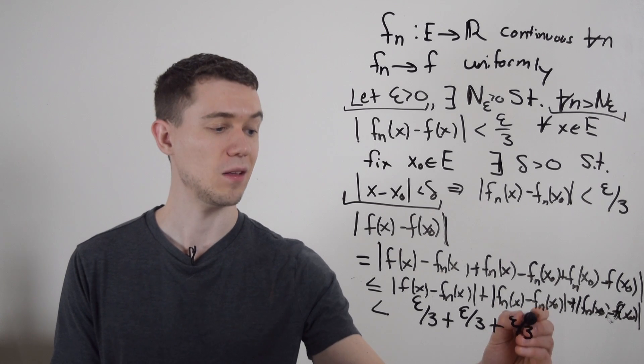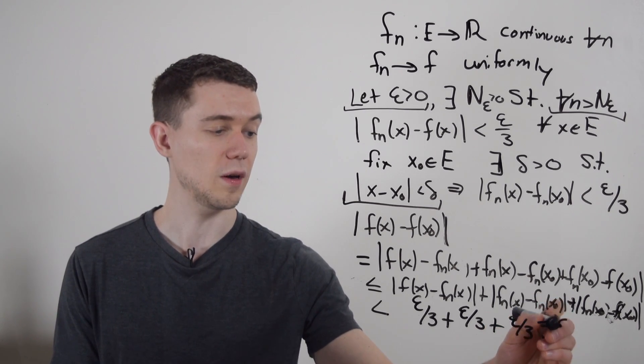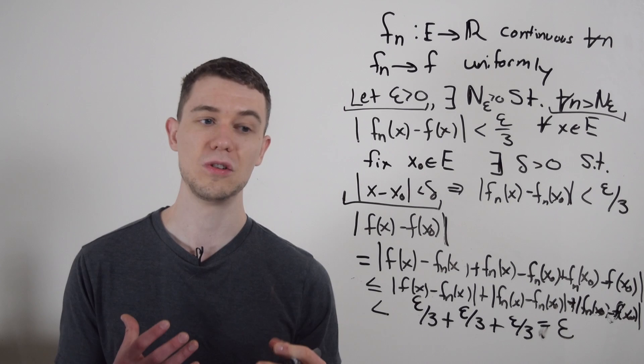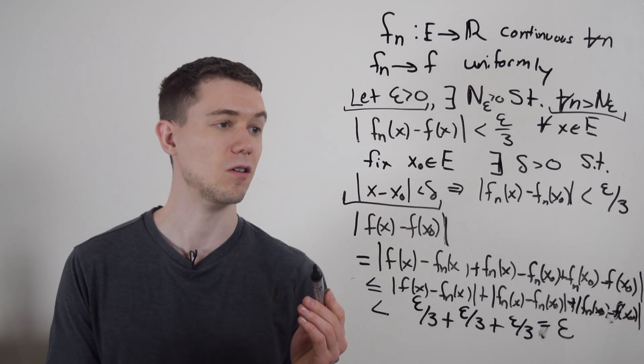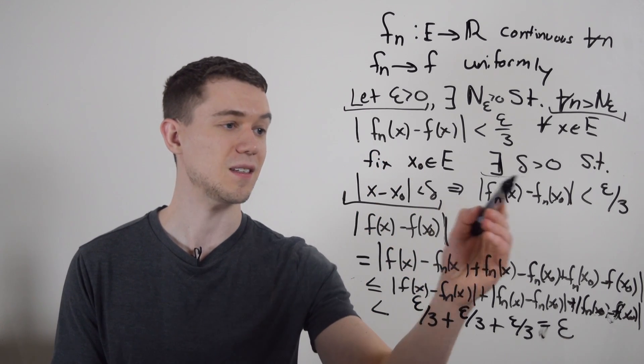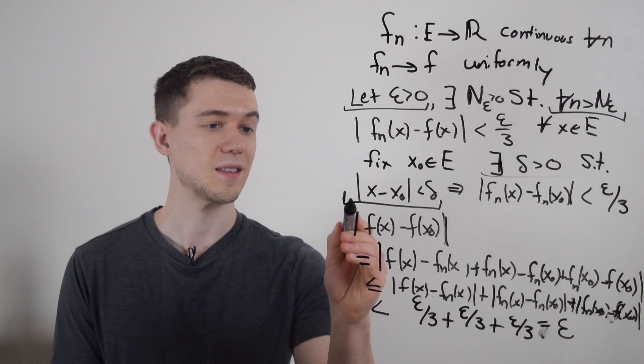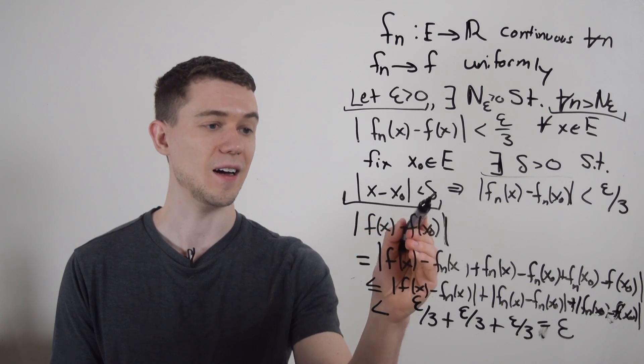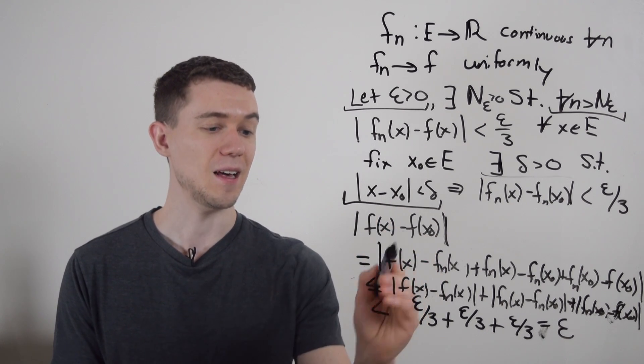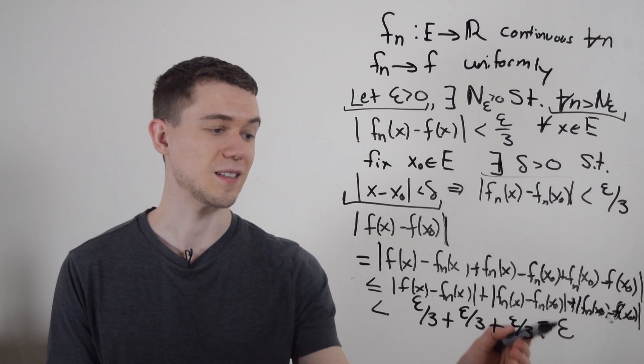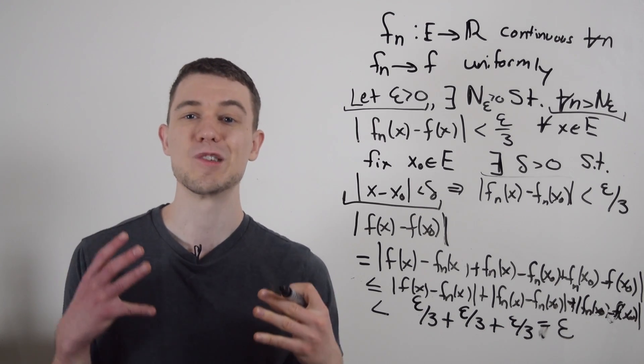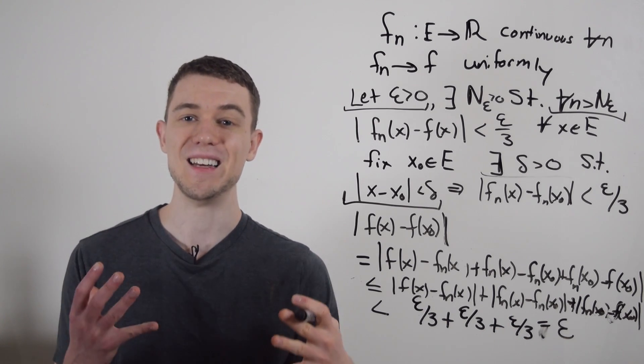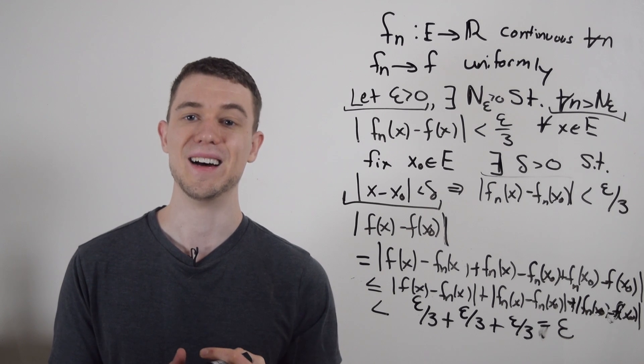And if I add three thirds, that's just going to give me one epsilon. And so what I've shown here is that for all epsilon greater than zero, there exists a delta greater than zero, such that x minus x naught, an absolute value less than delta implies that f of x minus x naught is less than epsilon.